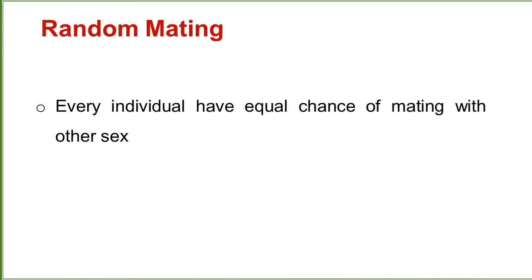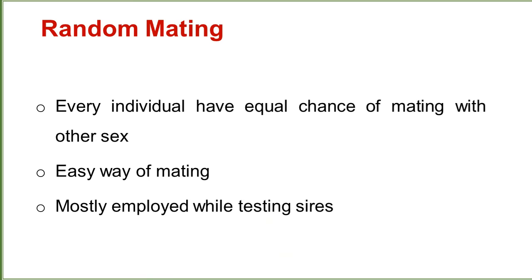Random mating: every individual has an equal chance of mating with every other individual of the opposite sex. It is an easy way of mating, mostly employed while testing sires. The sires or their semen material is tested, and sires having good quality semen are then used for breeding or mating.